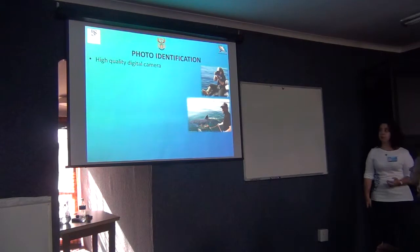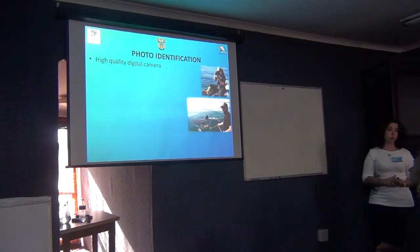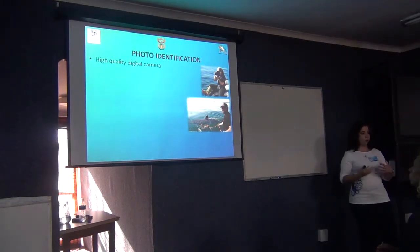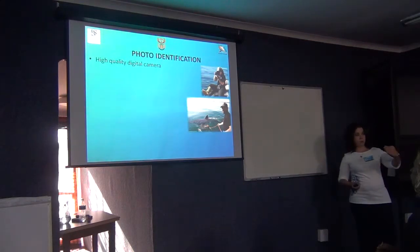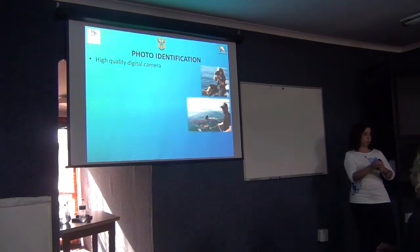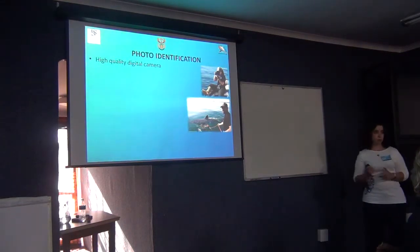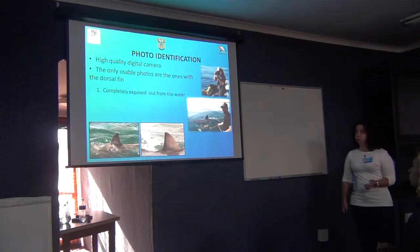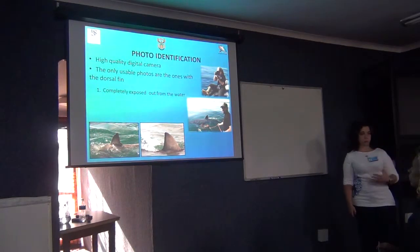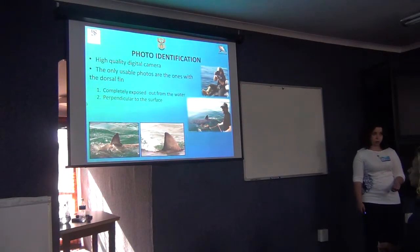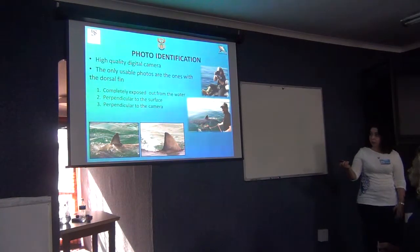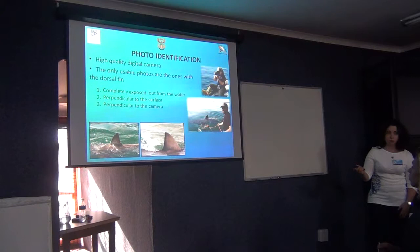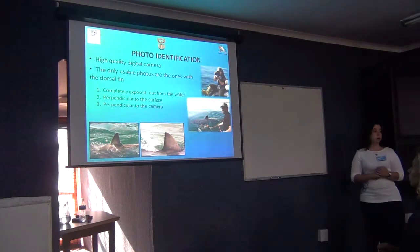RAW images retain all the information about the picture. The moment we save a photo as a JPEG, we are losing information — zoom in and we end up with a bunch of pixels. So RAW should be the way to go. The only usable photos should be ones where the fin is completely exposed out of the water, perpendicular to the sea surface and perpendicular to the camera, so that the notches on the rear of the dorsal fin are well visible.